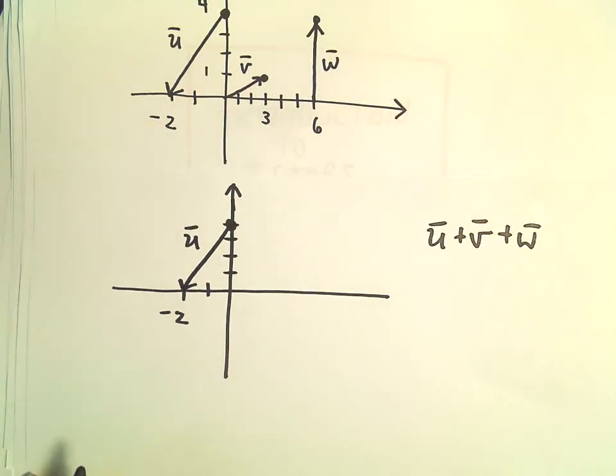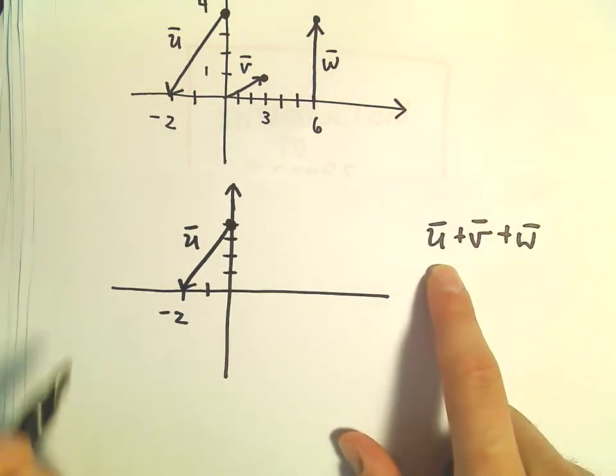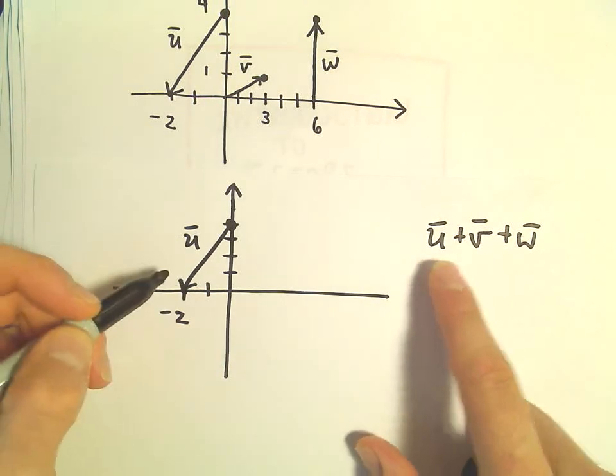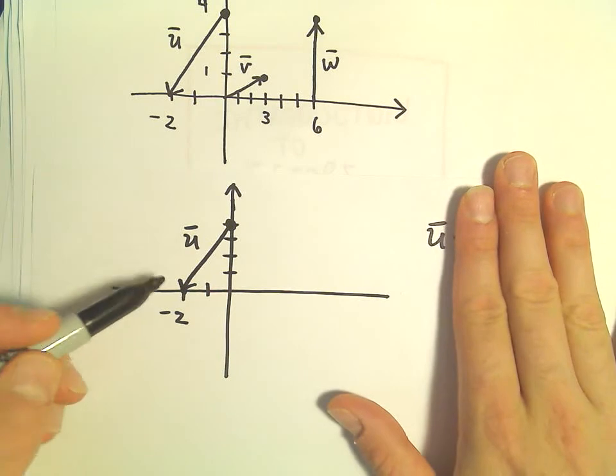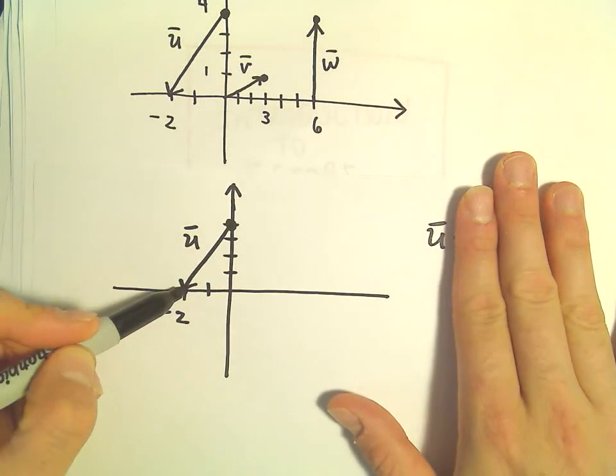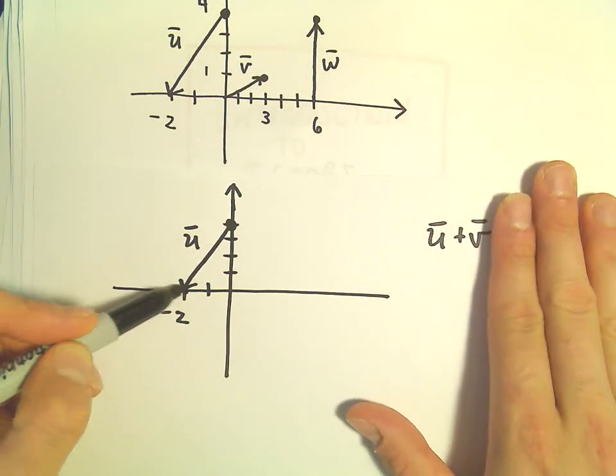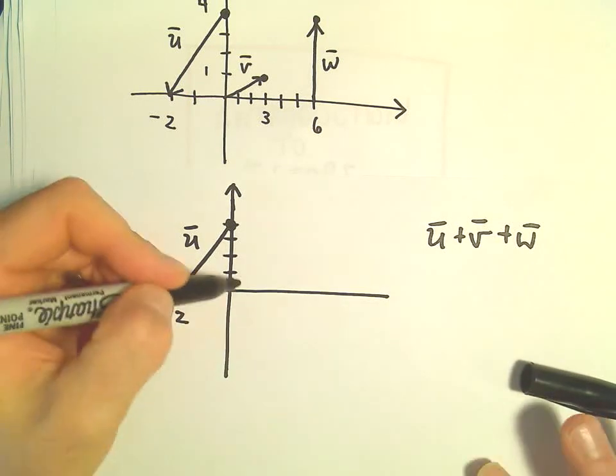When we create new vectors, when we add vectors together, in terms of drawing them, what I'm going to do next is take vector v. Wherever u stops, that's where vector v is going to start. So notice vector v.